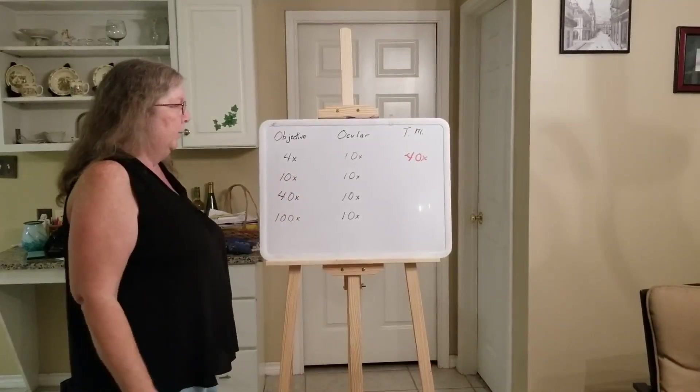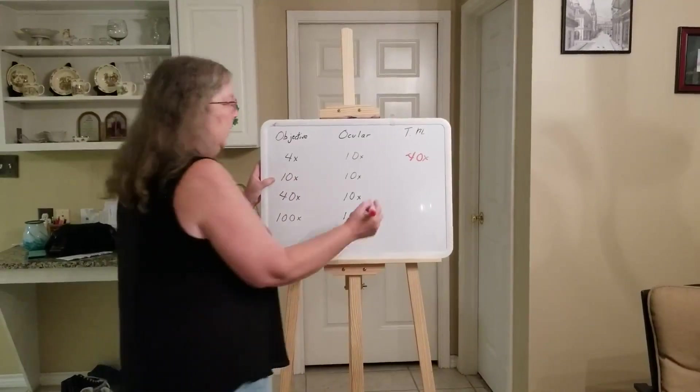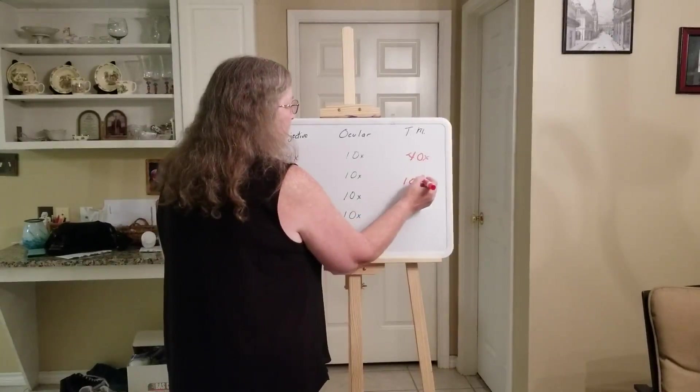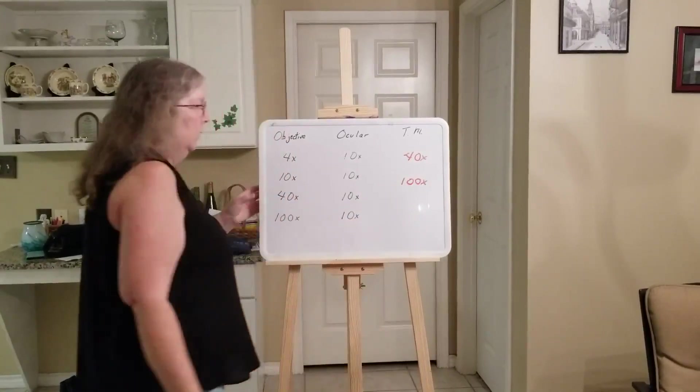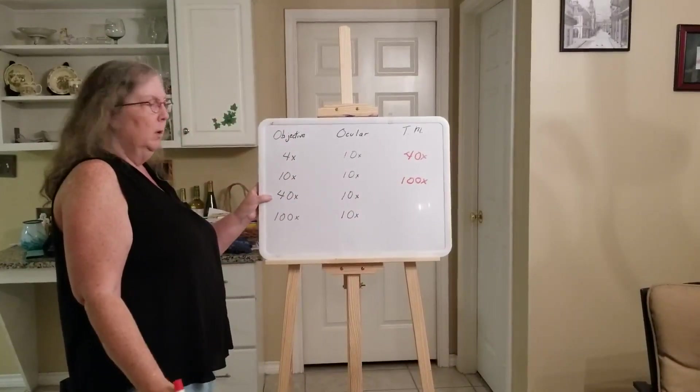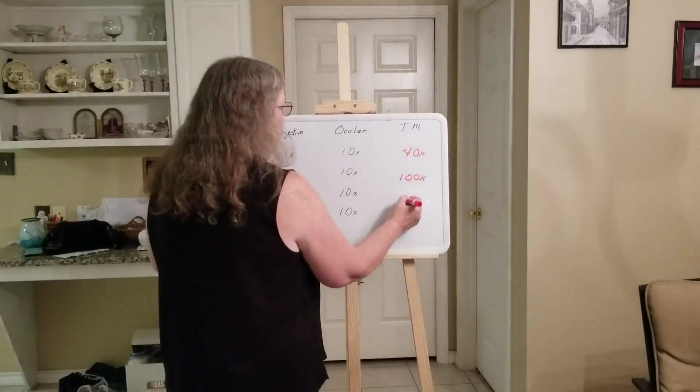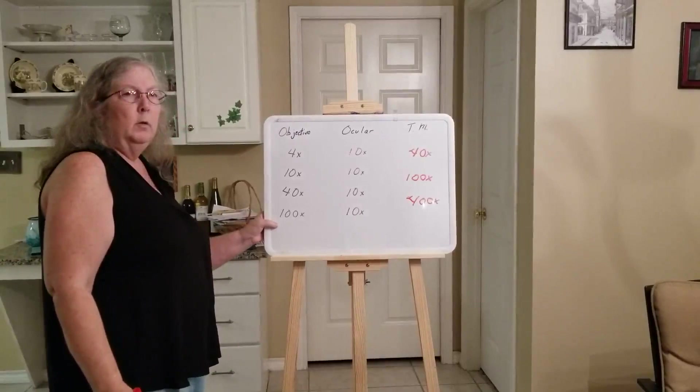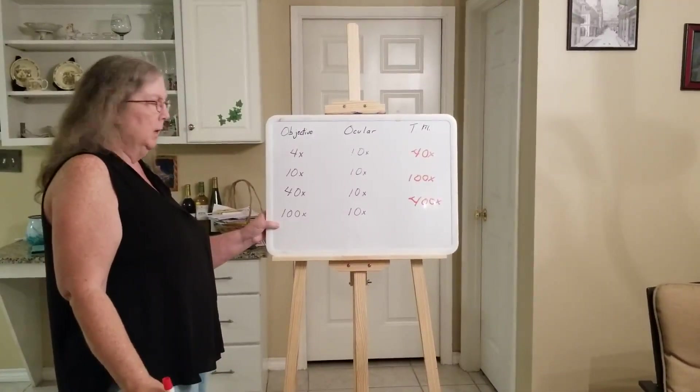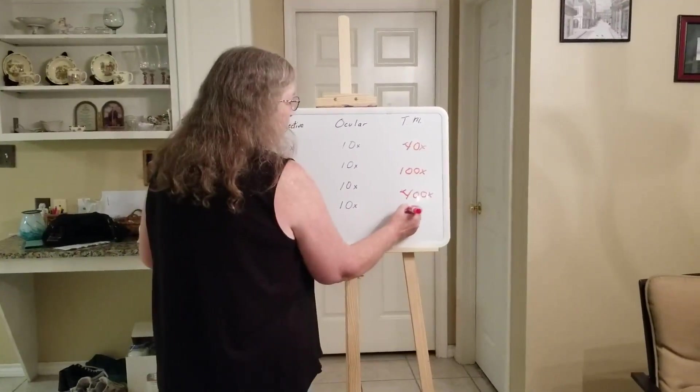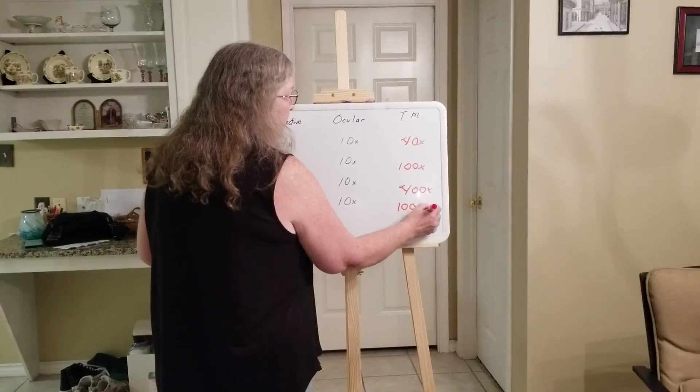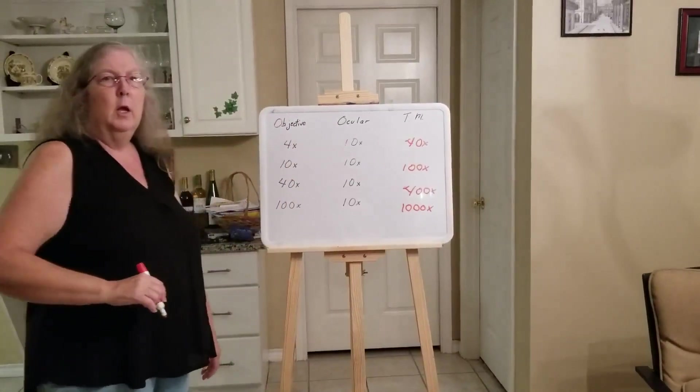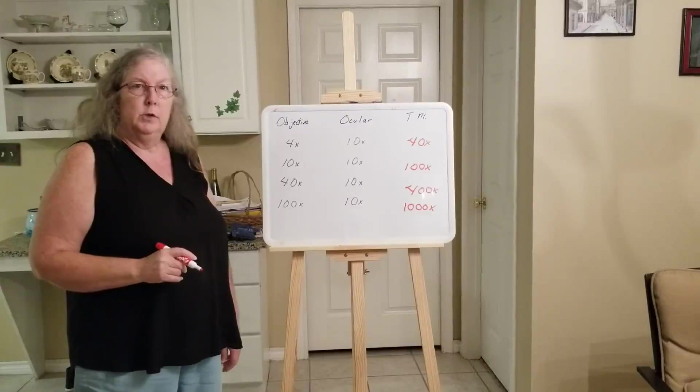Do that for all of them. If you're using the 10x, 10 times 10 is 100. The 40 would be 40 times 10, so it would be 400. And then the oil immersion lens, the 100x times 10 is 1000. 1000 times is as high magnification as you can get with a light microscope.